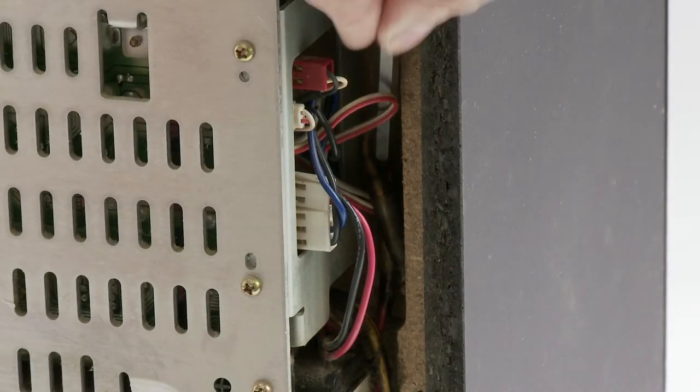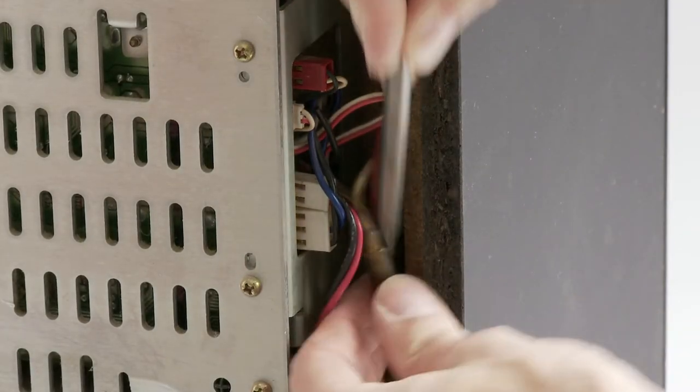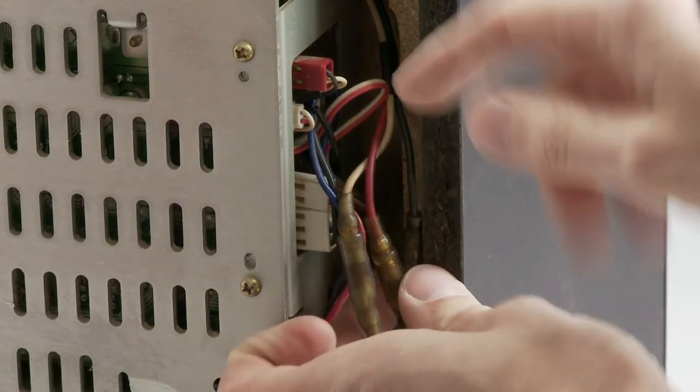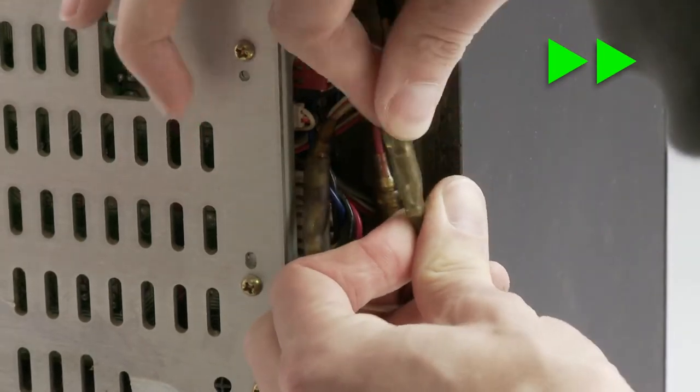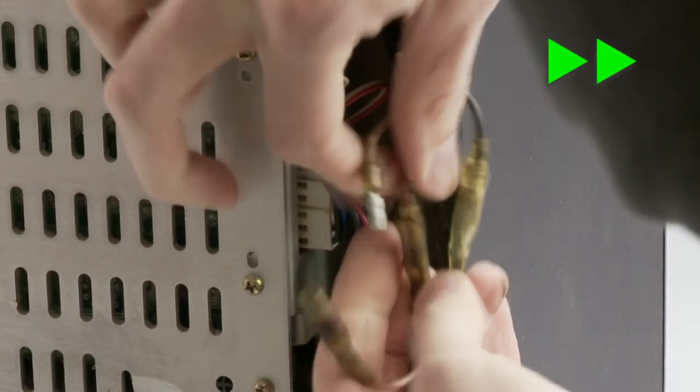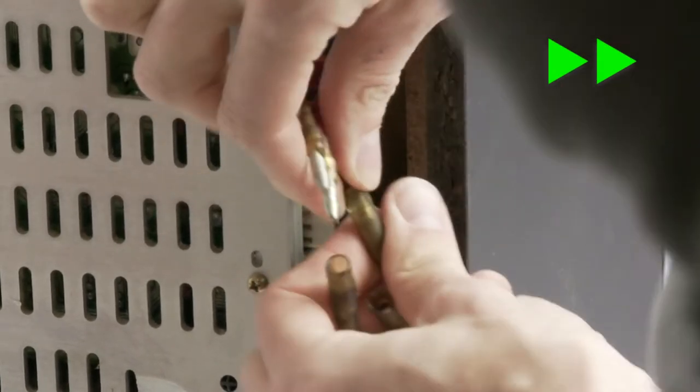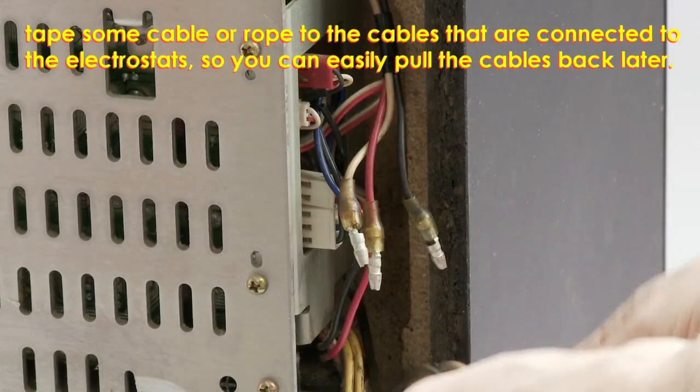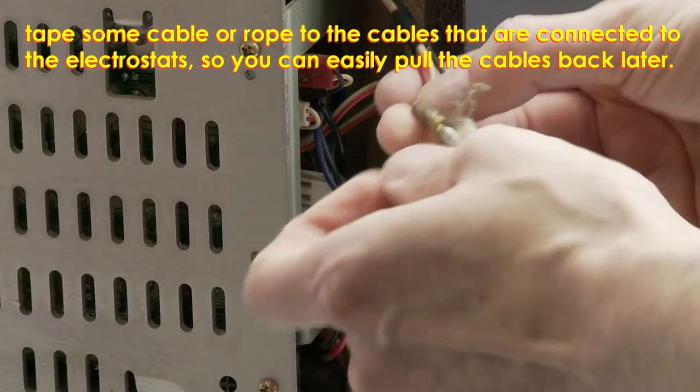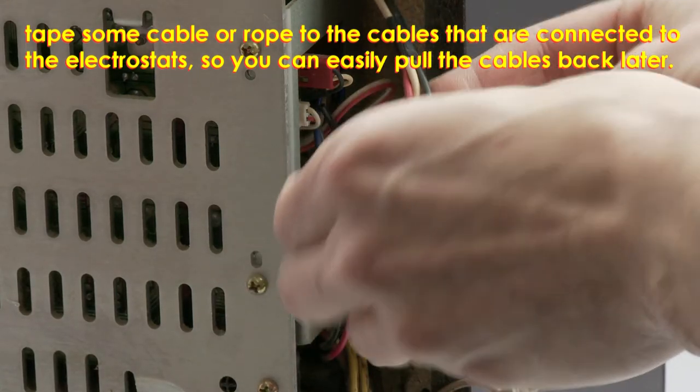The SA-EX100 has three cables running down from top to the back. Tie a cable or some rope to the cables so that you can easily pull them back later.